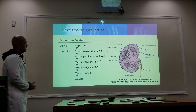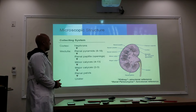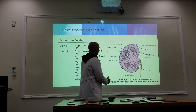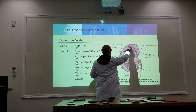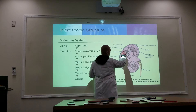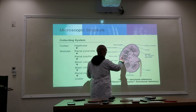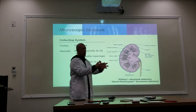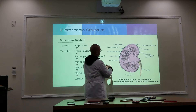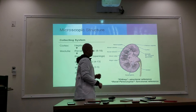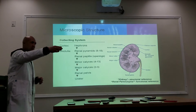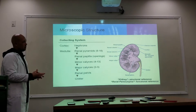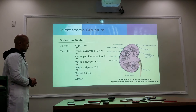The renal columns are areas where the cortex dips inward. Wherever the cortex dips, that's known as the column. Where the column terminates, there are small pockets — those are the renal sinuses. So the columns are where the cortex takes those little dips, and the small pockets are the renal sinuses.